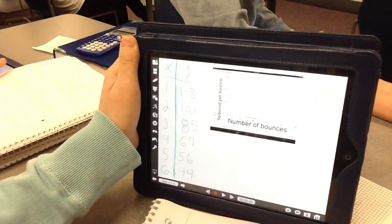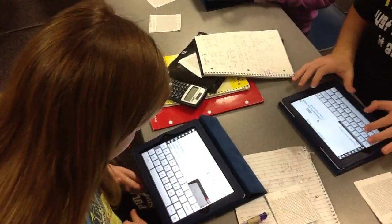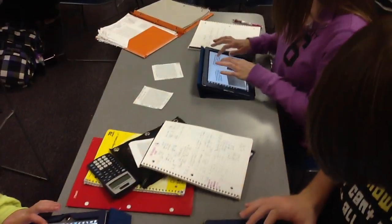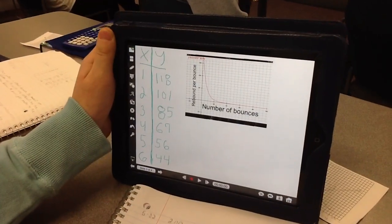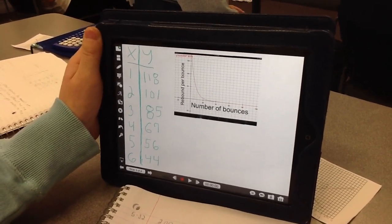The Explain Everything app really allows for so many parts to be placed on one screen. She combined the graphing calculator app with the Explain Everything app to put the words to her axes.